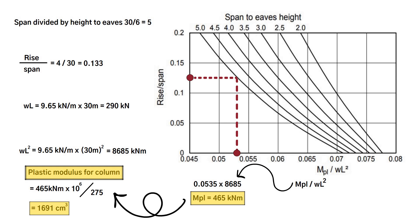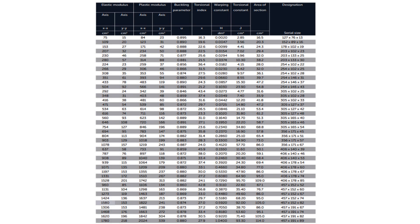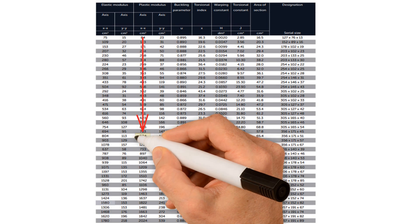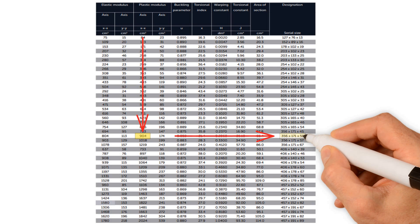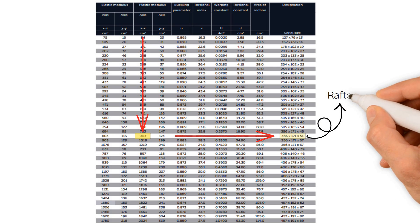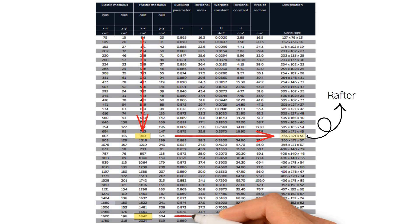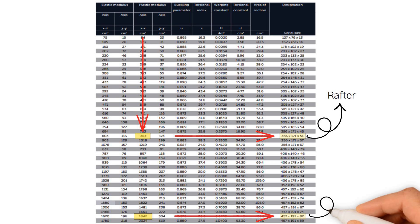Now from these figures, we should be able to find the adequate section sizes from the table where the plastic modulus is greater than the calculated ones. We choose 356 by 171 by 51 for the rafter, its plastic modulus 904 centimetre cubed is greater than 873. For the column, we choose 457 by 191 by 82, 1842 centimetre cubed is greater than 1691 centimetres cubed.